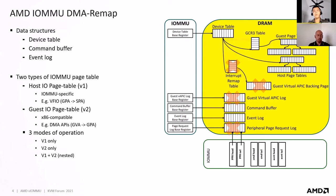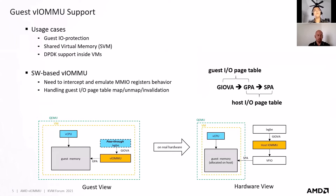You can also enable DMA API when you pass a device through into a guest VM — this is the nested IOMMU table case. Over the years, we have seen a lot of requirements from end users to enable IOMMU in a guest VM, either for guest IOMMU protection, shared virtual memory, or other purposes. A lot of users use the software-based virtual IOMMU solution. However, software-based solutions need to intercept emulated MMIO registers, introducing extra overhead, and IOMMU page table management is another layer of overhead.